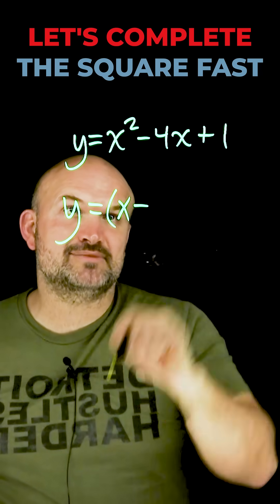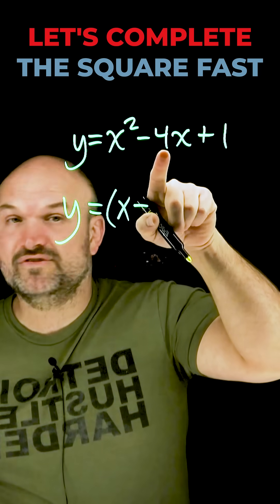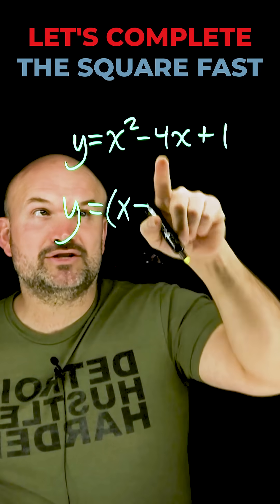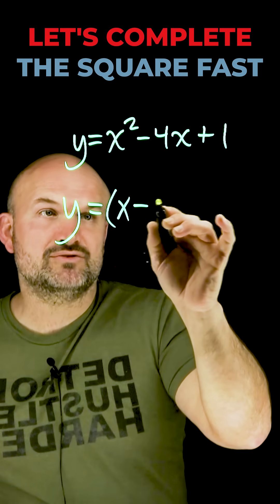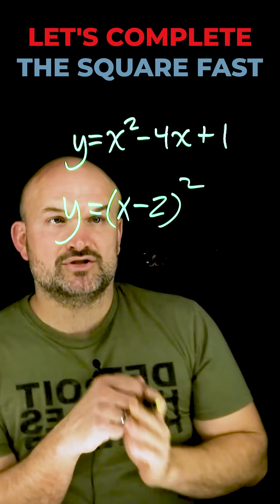To find your term inside this parentheses, you're simply just going to take your b, which is the coefficient of your linear term, and divide it by 2. 4 divided by 2 is just going to be a 2. That is going to be your binomial squared.